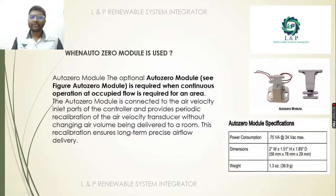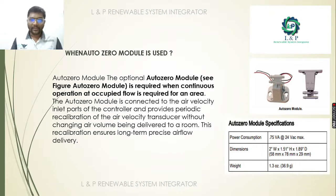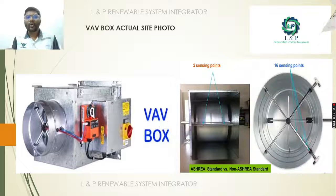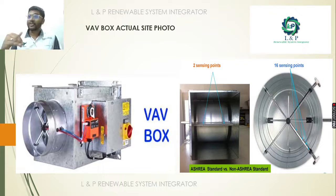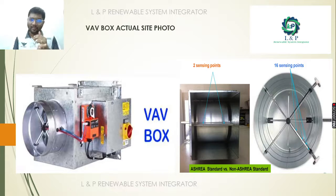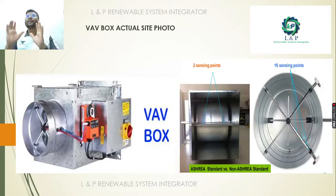If you are planning to maintain your VAV in fully occupied mode, use the AutoZero module. This is a real-time actual photo of the VAV. There are certain varieties — based on volume they will be different sizes. But the basic things will be there: sensing points, dampers, and a controller fixing box.